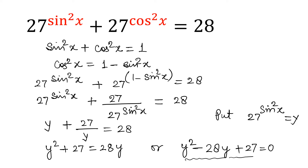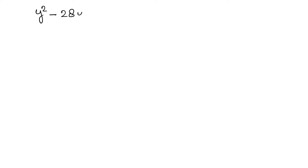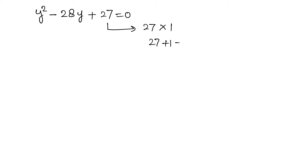In other words I can write y² − 28y + 27 = 0. Now we have to solve this quadratic equation. I am going to split 28y as 27y − y, since the factorization of 27 is 27 and 1, and 27 + 1 = 28, matching the middle term.